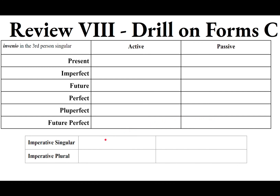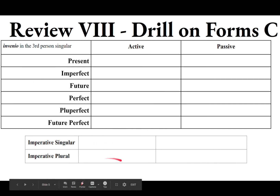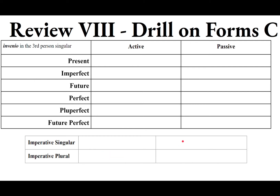For the imperatives of INVENIO, a fourth conjugation verb: take the second principal part and chop off the RE — same as the present stem — giving INVENI: find. The plural is INVENITE: find ye / everyone, find it. For the passive imperative singular, it's the same as the second principal part: INVENIRE — be found / get found. Plural: INVENIMINI — be found, all y'all.